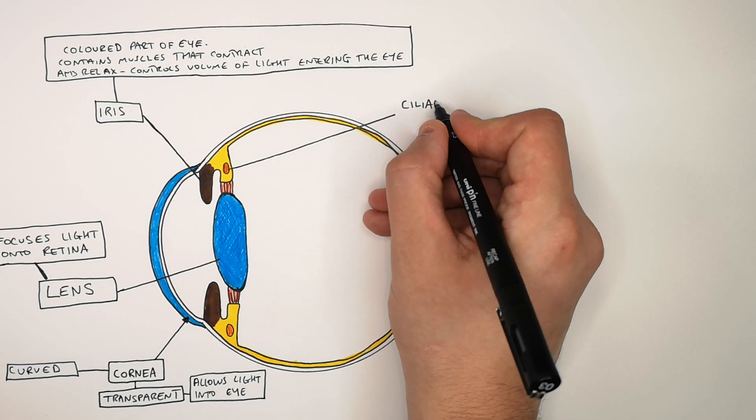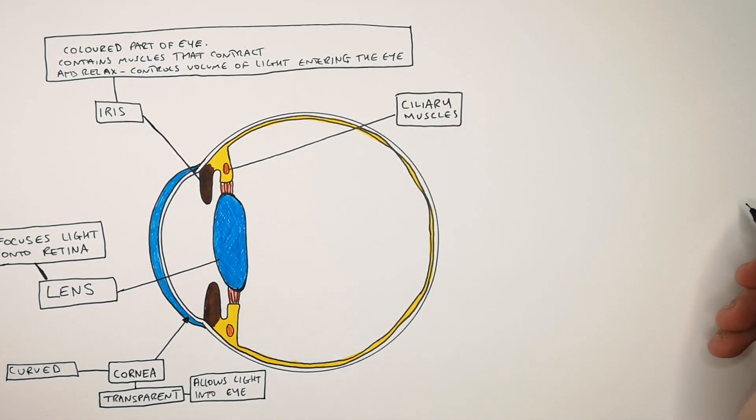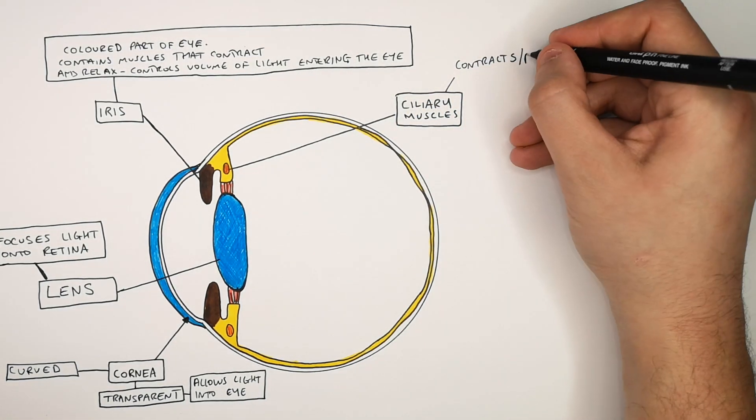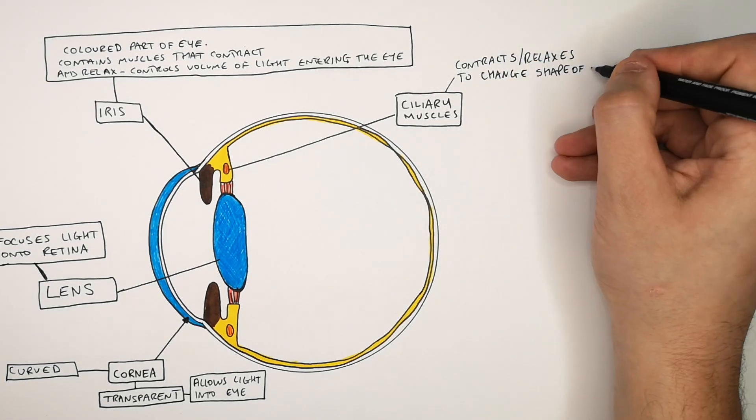These are the ciliary muscles. And because they are muscles, they contract and relax to change the shape of the lens.